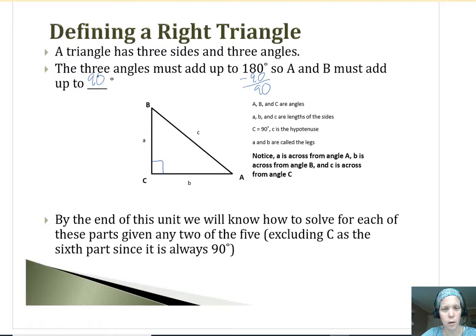So we can use that shortcut when I have a right triangle. That 90 is already gone, because if I have a right triangle, I automatically have that 90 degrees, so A and B would have to add up to 90.